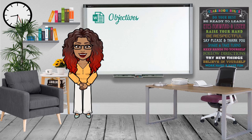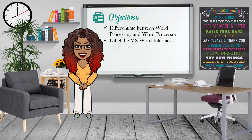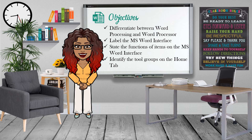The objectives for today's lesson are: firstly, we want to be able to differentiate between Word Processing and Word Processor. Next, we want to label the Microsoft Word interface. Third, we want to state the functions of items on the Microsoft Word interface. And lastly, we want to identify the tool groups on the Home tab.